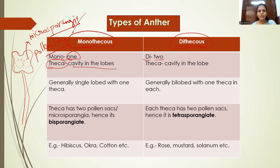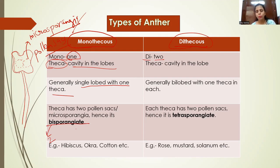The microsporangia or pollen sacs are the space inside the anther where the entire formation and development of pollen grains takes place. Monothecal anther has a single lobe with one theca, and inside that theca there are two pollen sacs or two microsporangia. Hence monothecal anthers are called bisporangiate — 'bi' meaning two and 'sporangiate' meaning microsporangia. Examples include hibiscus, okra, and cotton.